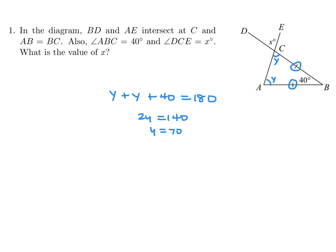Now, this angle Y and this angle X are opposite each other, and since they're opposite, they're equal. X is equal to Y, so therefore X would be equal to 70.